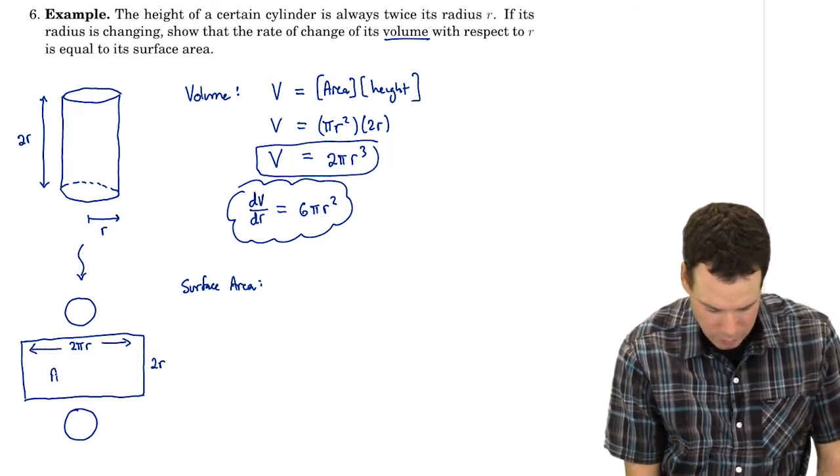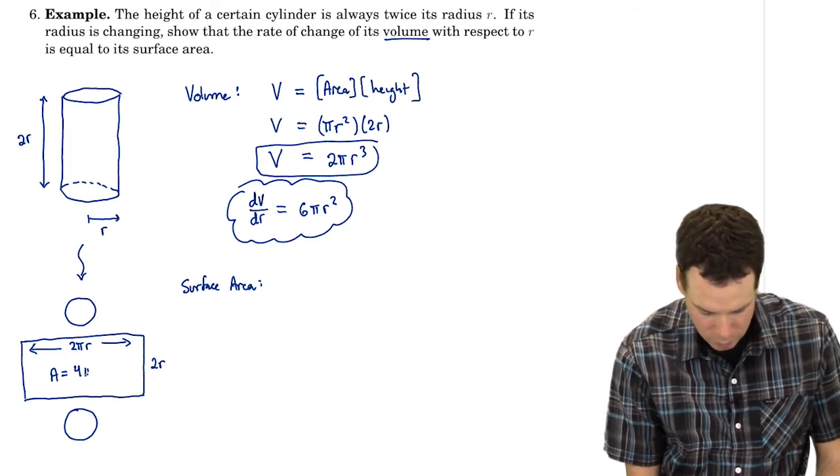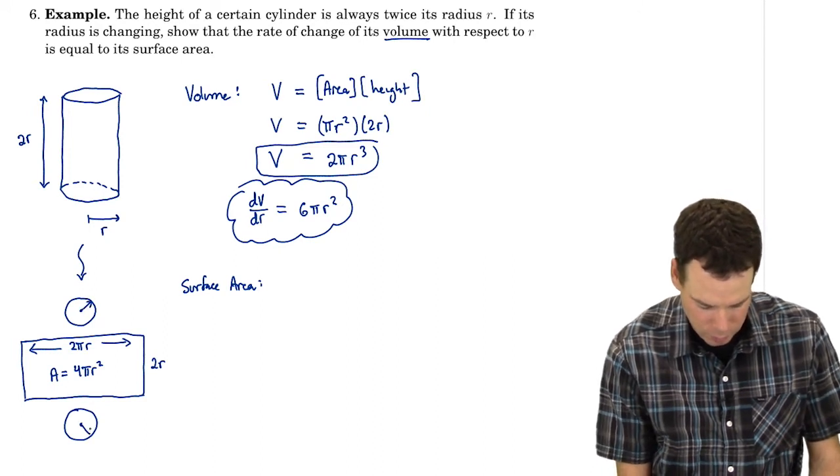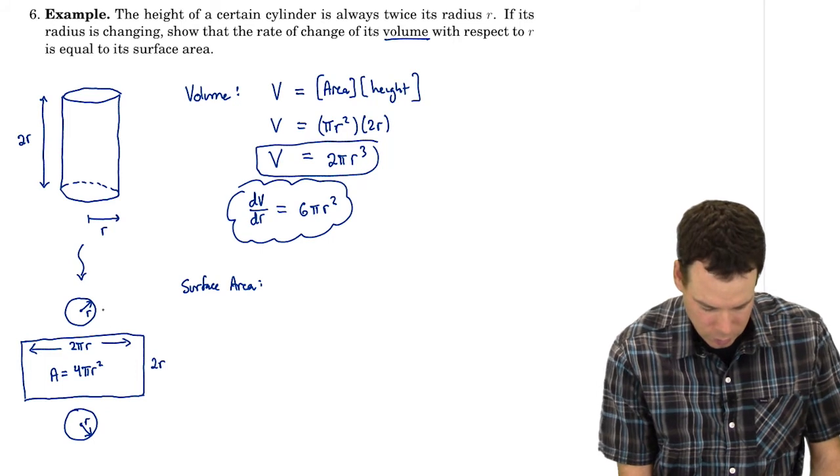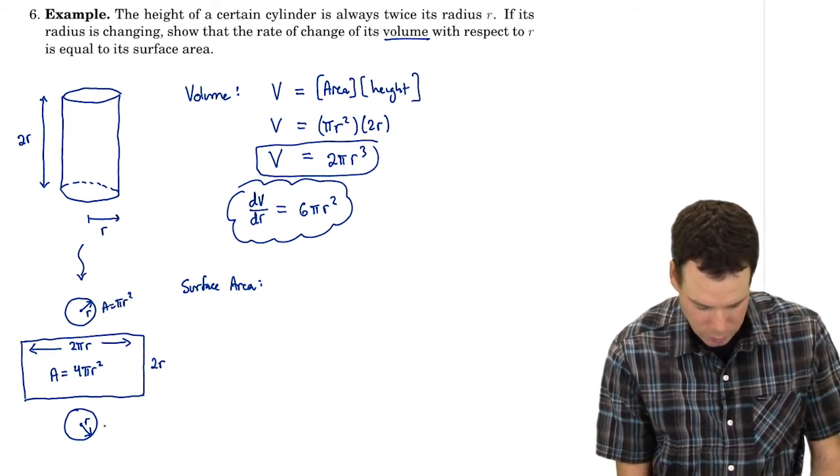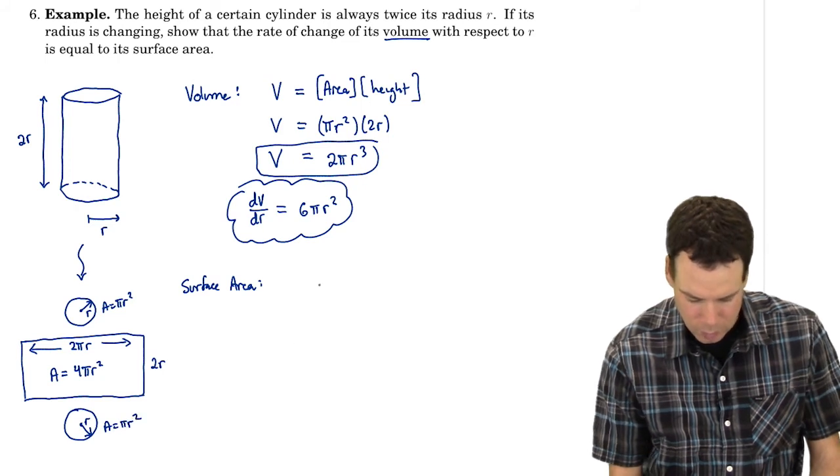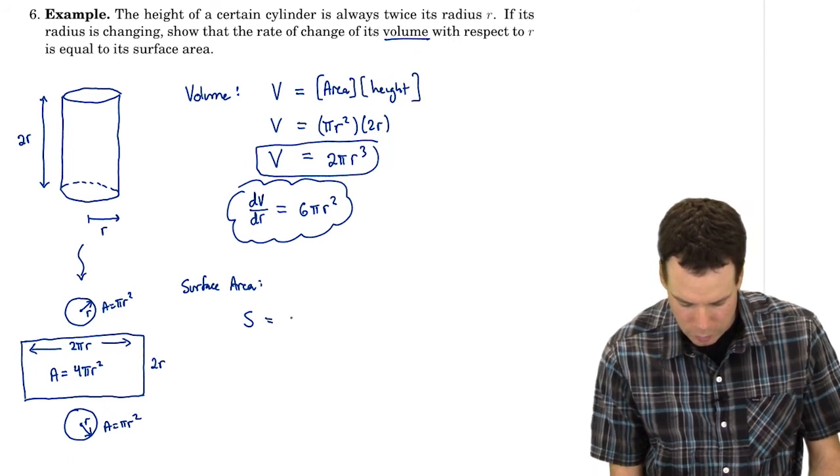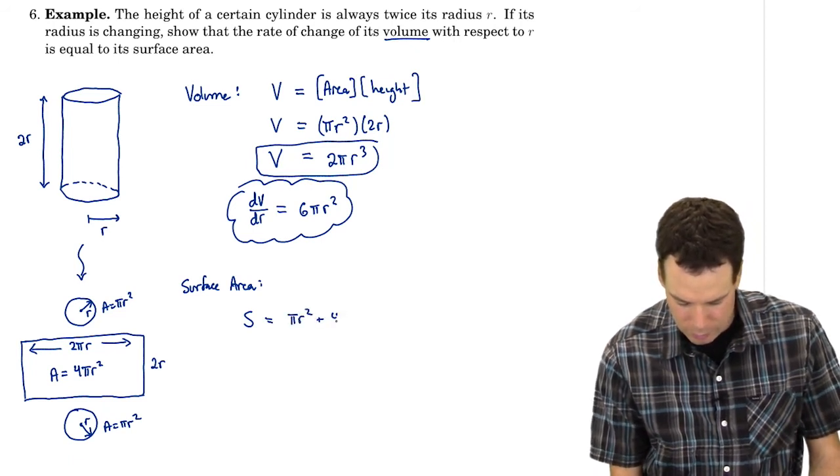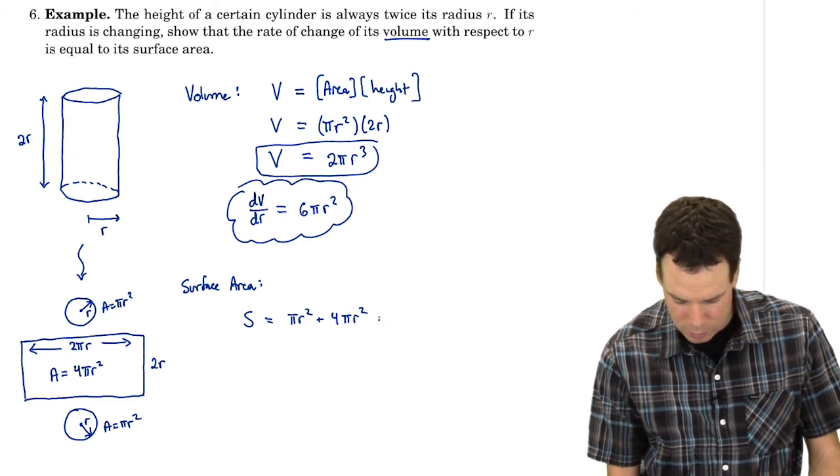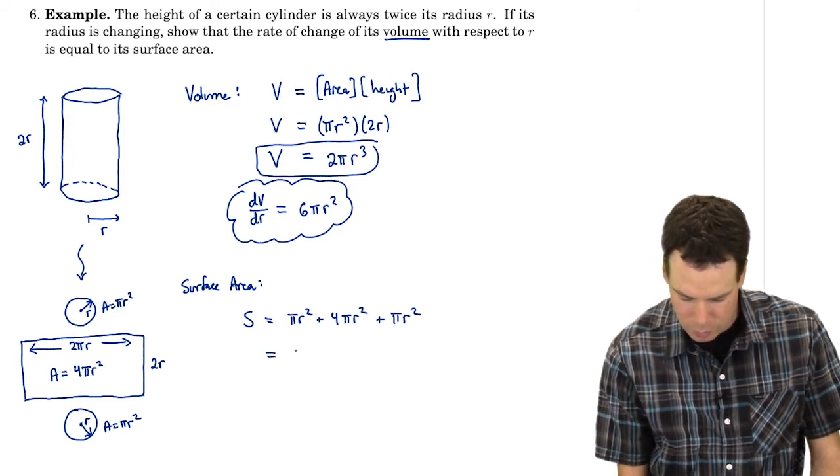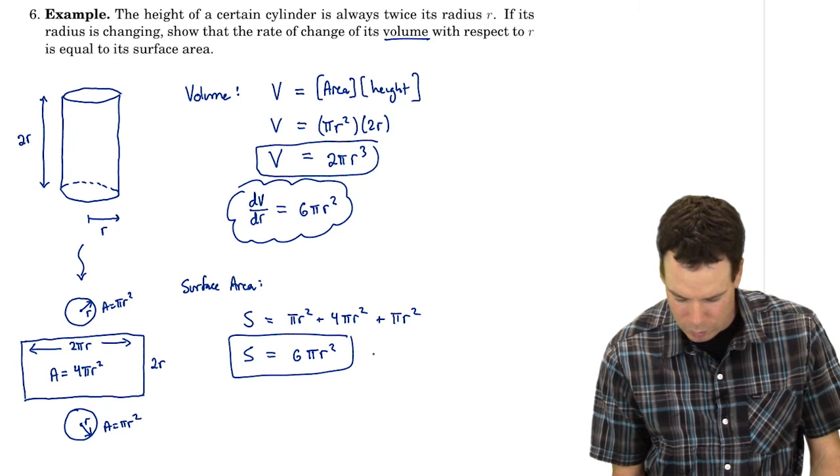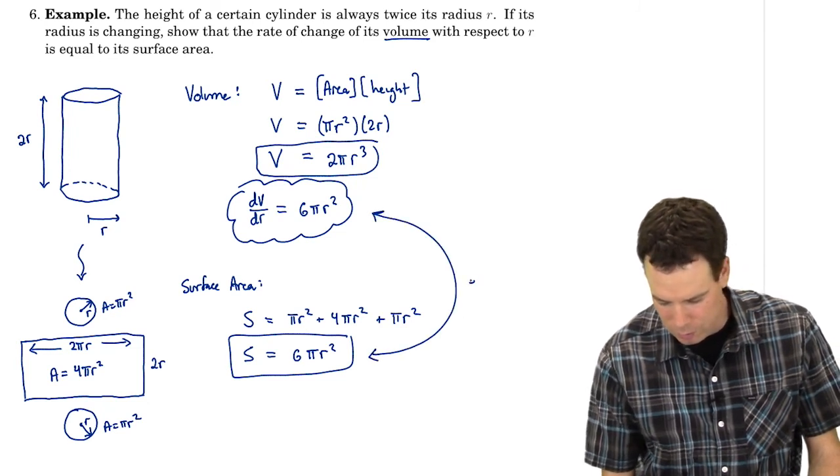To find the area of this rectangle, we take the product of the two dimensions: 4πR². The circular top and bottom each have area πR². So our surface area is the top plus the lateral section plus the bottom, which equals 6πR². That's our surface area, and we notice these are equal.